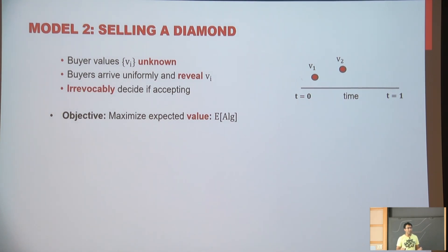But these values are being revealed to you one by one gradually. So suppose you have a time horizon from t equals zero to one. At each time step, one of the buyers arrive. They tell you their value. And these buyers are arriving in a uniformly random model. Because they choose arrival time uniformly from zero to one independently. And as soon as they arrive, they reveal you their values.